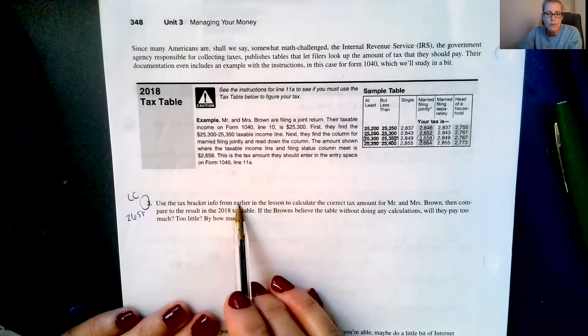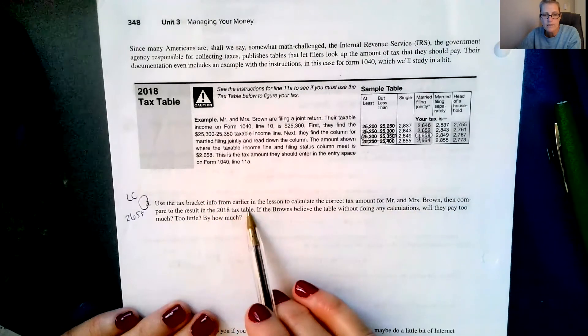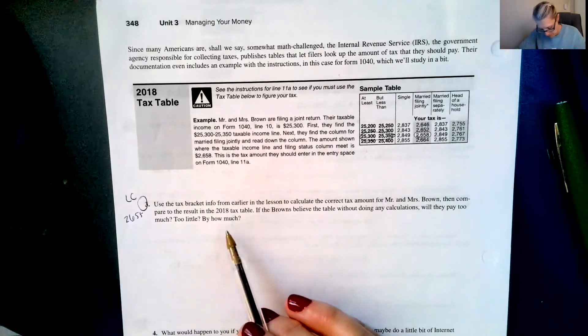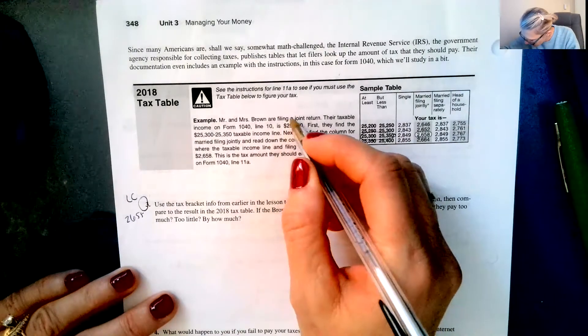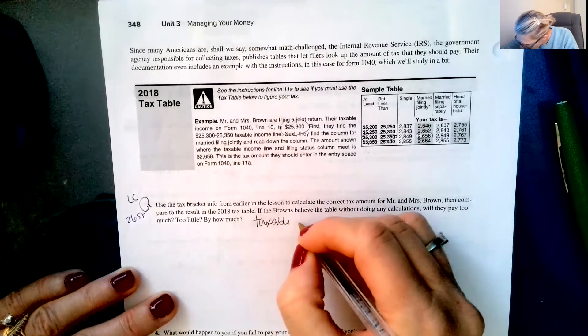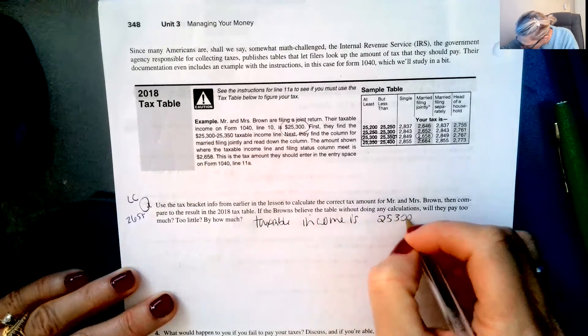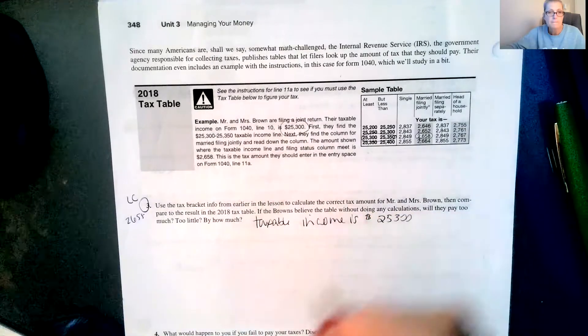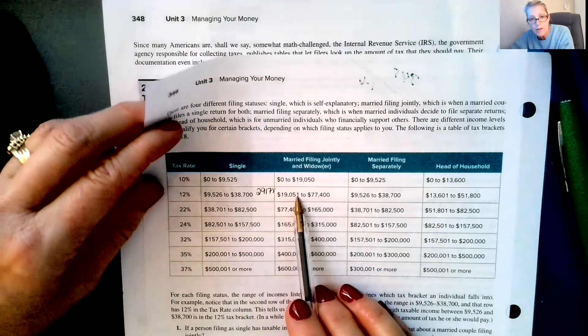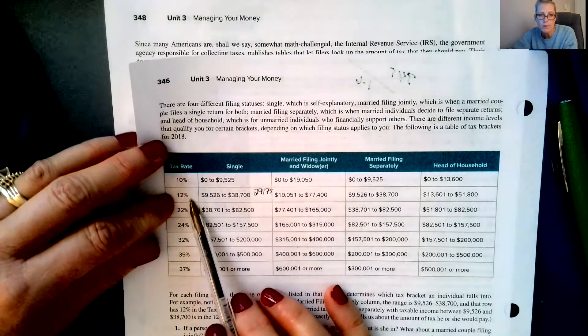Number three says use the tax bracket info from earlier in the lesson to calculate the correct tax amount for Mr. and Mrs. Brown, then compare to the result in the 2018 tax table. If the Browns believe the table without doing any calculations, will they pay too much, too little, and by how much? So their taxable income is $25,300, and they're married filing jointly. So they're in this category, they're in the 12%. So they're going to pay all of the 10% and part of the 12%.